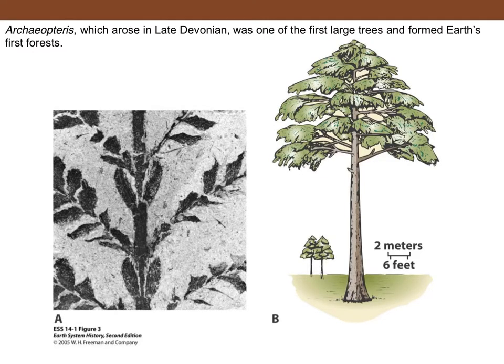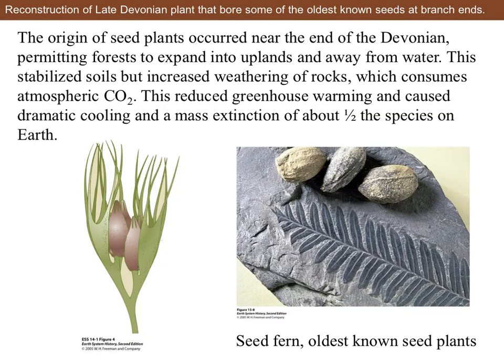Archaeopterus was the earliest tree-like plant, arising in the late Devonian, and it had structures we would really consider leaves — you can see it was pretty tall. Archaeopterus doesn't exist anymore; we know it only as a fossil, just as with Rhynia. Some fossils were found that allowed scientists to reconstruct the ancestor to the seed plant, and these seed plants arose near the end of the Devonian period. By developing seeds, plants were able to move away from water because they no longer needed water for fertilization.